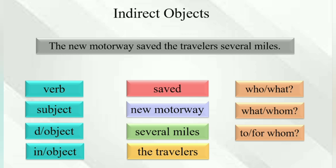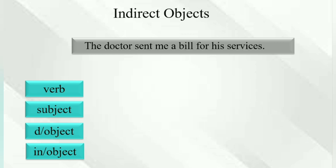After identifying the subject and verb, you ask 'what' to find the direct object, and then from the direct object you ask 'to whom' or 'for whom' to find the indirect object. Now let's see the next examples.